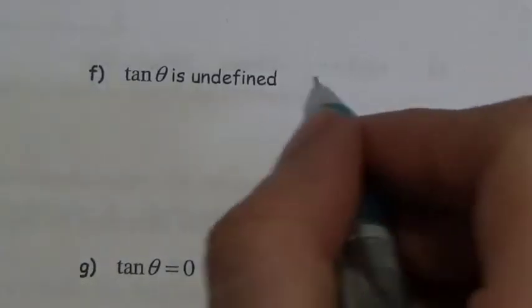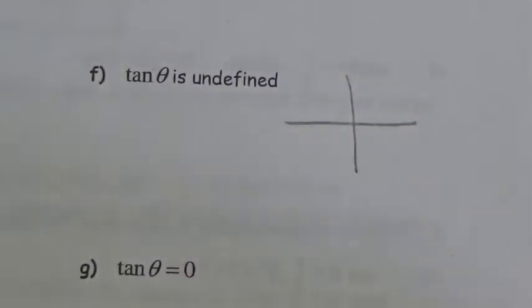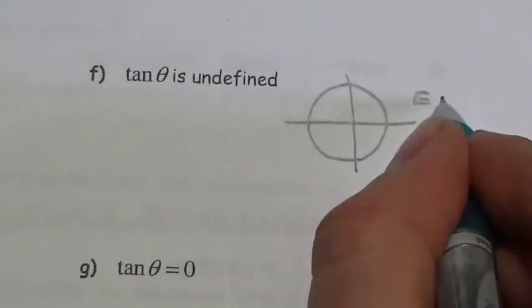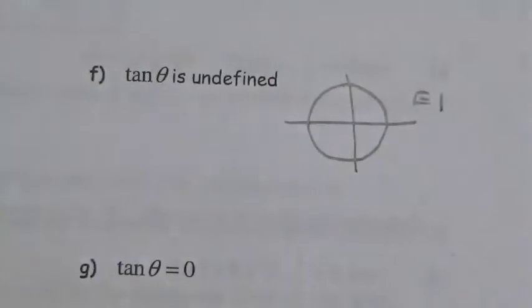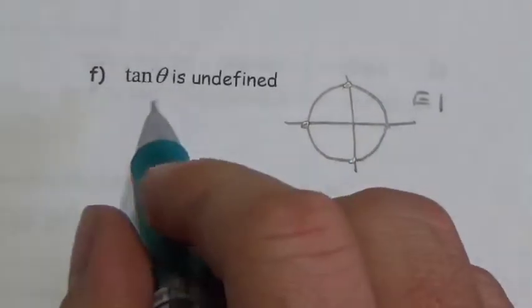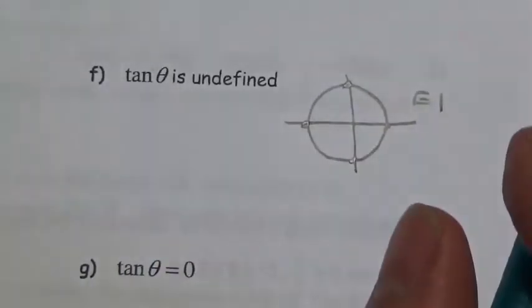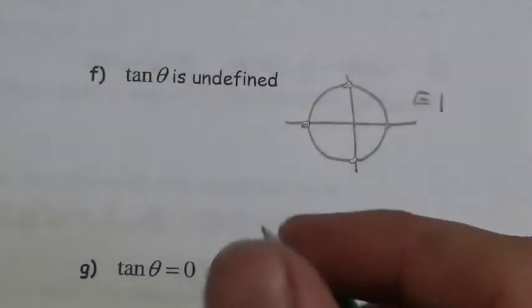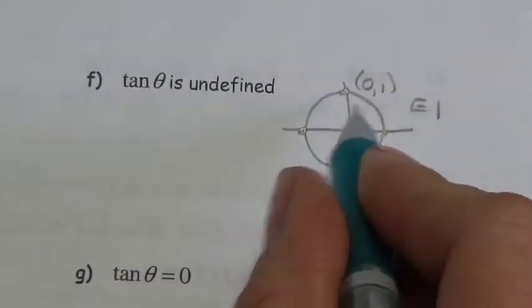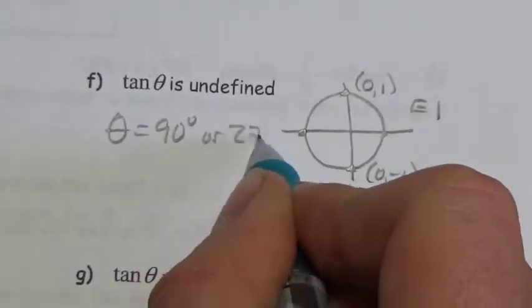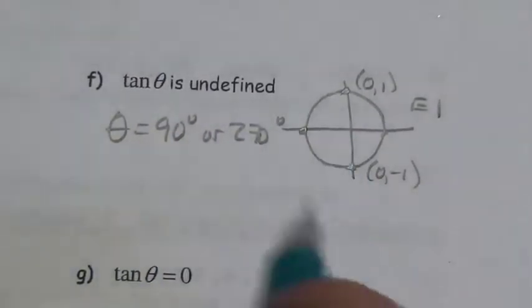Tangent is undefined. We won't get an undefined value from either special triangle because no side becomes zero. This must be a quadrantal angle. Tangent equals y divided by x, so it's only undefined when the x-coordinate is zero. That happens at two points on the unit circle — coordinates (0,1) and (0,-1) — giving theta equal to 90 degrees or 270 degrees.